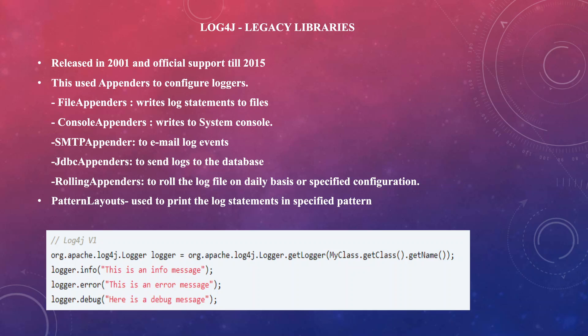Unlike JUL, Log4j used the concept of appenders to configure loggers. It came with a variety of appenders: file appender to write log statements to files, console appender to write to the system console, SMTP appender to email log events, JDBC appender to send logs to the database, and a rolling appender to roll log files on a daily basis or based on configuration like a maximum file size of 10 MB. It also has pattern layouts to print log statements in a specified pattern. Method names were intuitive: info, error, and debug.